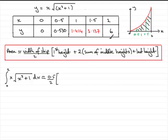First height, the first height, this one here in the table is 0 for this example, plus twice the sum of all the middle heights, that's all these green ones here. So that's going to be 0.530, just pop that in, 0.530, plus the next height, 1.414, plus the next one, 3.137, close the bracket off,